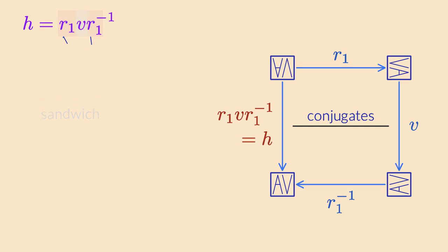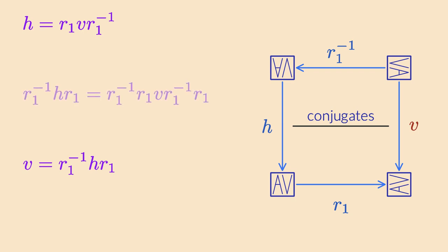You can also easily turn things around. Flip the top and bottom arrows, and read the diagram from right to left. You see that this time, v is the one that can be written in the same form, this time with h in the sandwich. Algebraically, you can derive this by just multiplying both sides of the equation with a second sandwich, which cancels the first sandwich on one side. That's one of the weirdest sentences I've ever said, out loud at least. This shows that conjugacy goes both ways. h is a conjugate of v, and v is a conjugate of h. The conjugacy relation is symmetric.